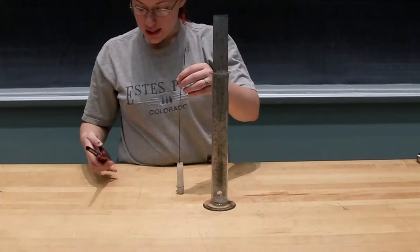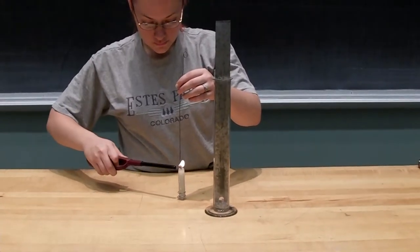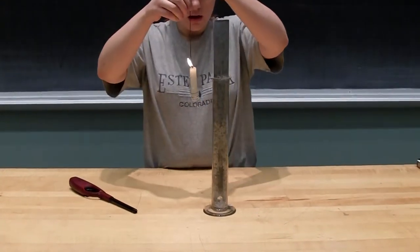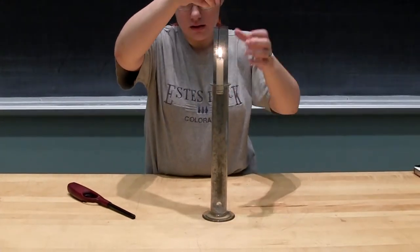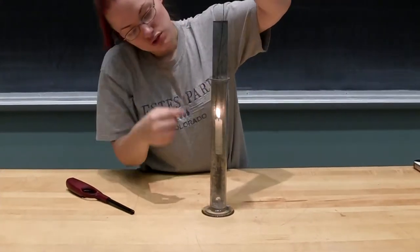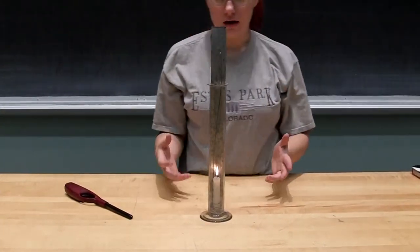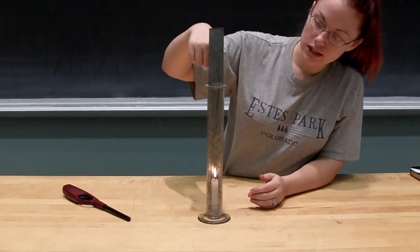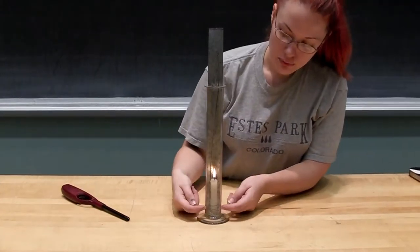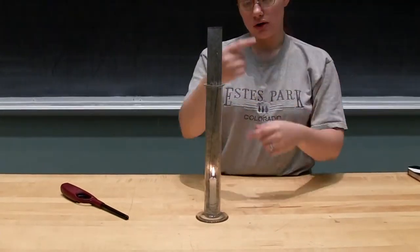Now I'm going to go ahead and light our candle, and you'll see that with our strip of metal in here, we have a chimney working where we have cool air coming in the back and pushing the hot air out and giving circulation.